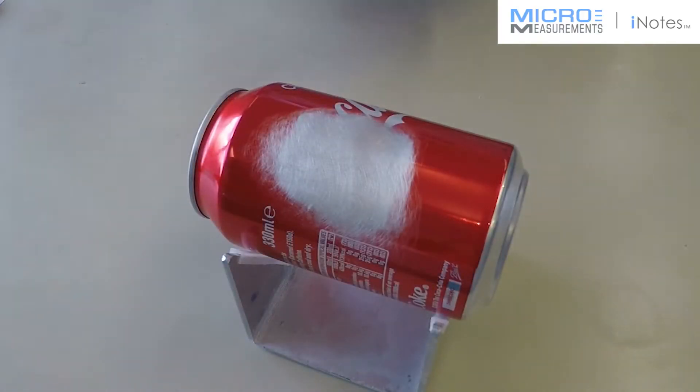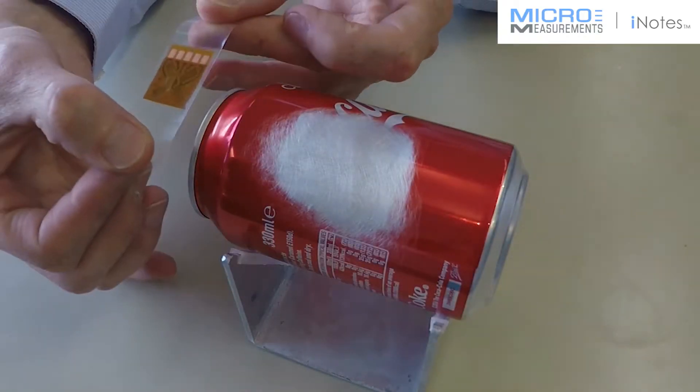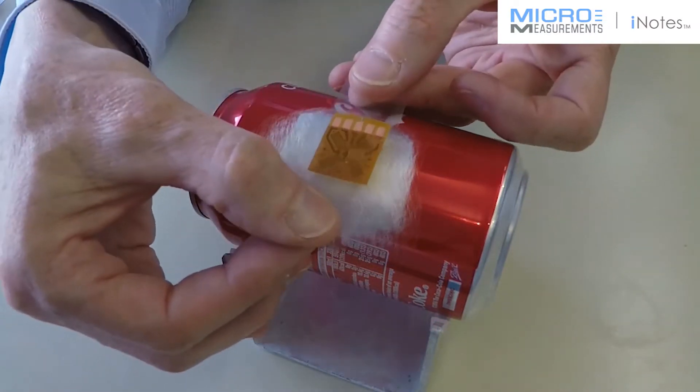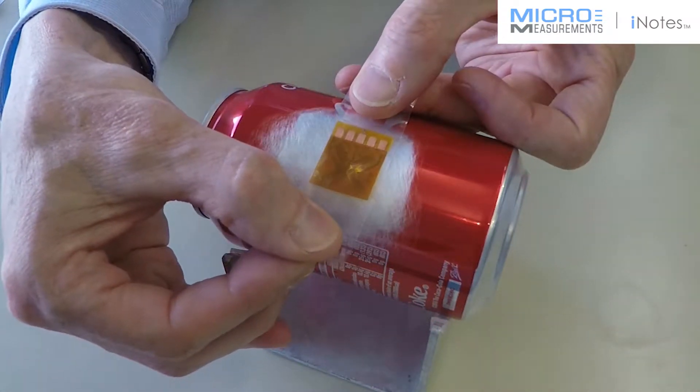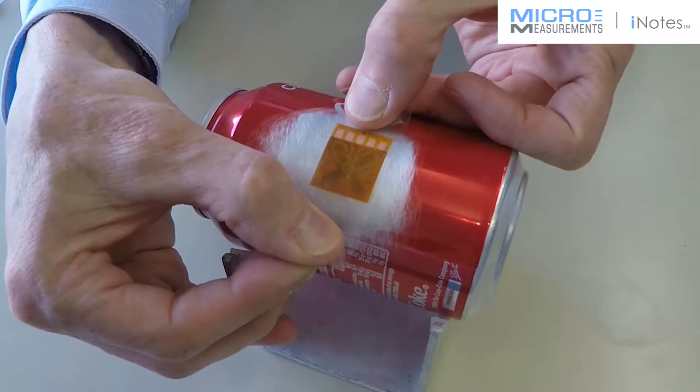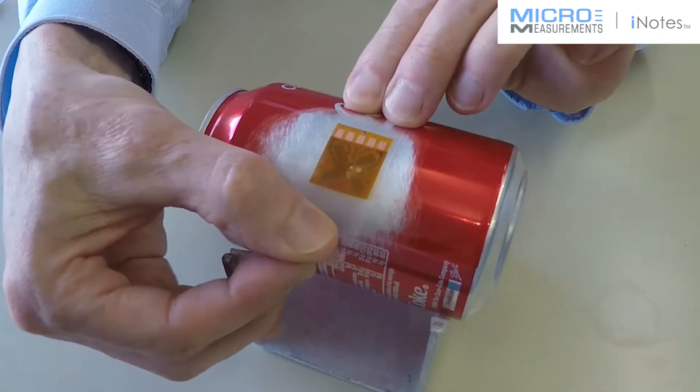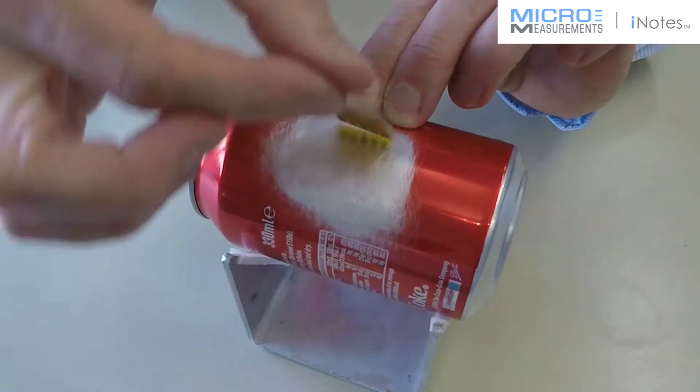Now that I've prepared the surface of the can, I'm going to take my gauge that I've pre-mounted to a piece of gauge handling tape. And I'm going to position it as carefully as I can to get it parallel to the axis of the can. And when I'm happy, I'm going to expose the back, ready for bonding.